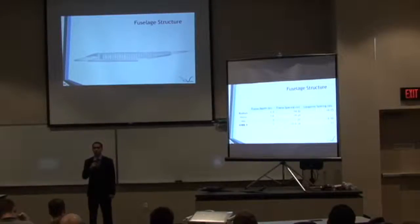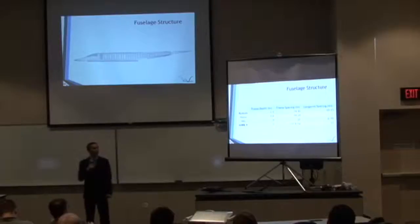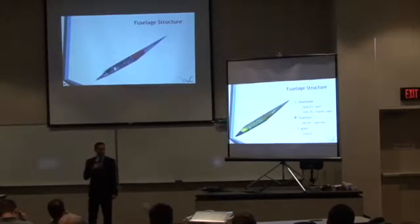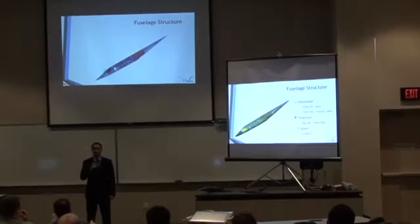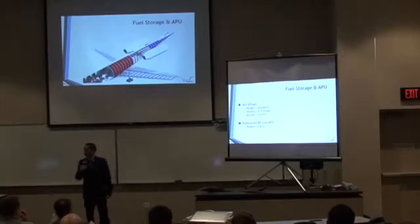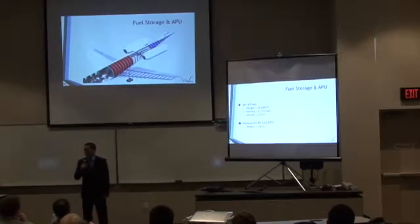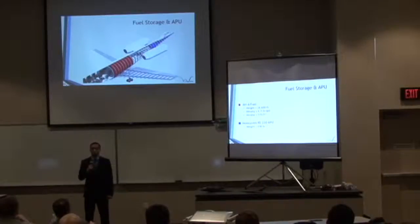Next on the primary screen is the structure of the fuselage. This is based on Roskam design recommendations, resulting in a frame depth of 3 inches, frame spacing of 24 inches, and longeron spacing of 12 inches. An isometric view of the fuselage structure is shown on the primary screen. On the secondary screen, green represents aluminum alloys for the skin and frames, black represents titanium alloys for the nose skin, and the forward fuselage structure is proposed of e-glass composite.